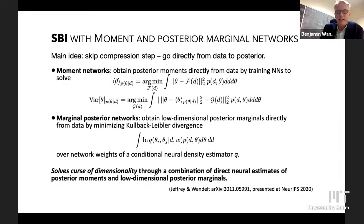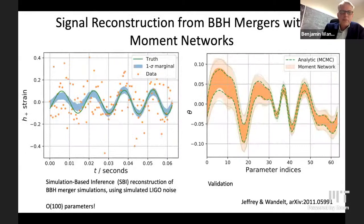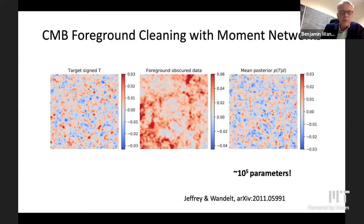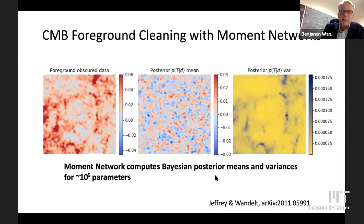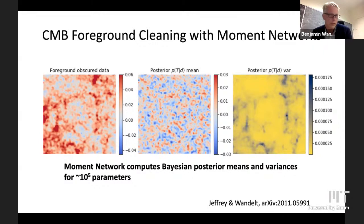You solve the curse of dimensionality — rather than learning a high-dimensional posterior surface, you just learn lower-dimensional projections that are typically the only objects you can really handle in practice. This is described in a NeurIPS paper. Here are examples based on gravitational wave simulations from binary black hole mergers, going up to a hundred thousand parameters — every single pixel is now a parameter. We applied this to CMB foreground cleaning. This is for temperature simulations obscured with a non-Gaussian foreground model. It turns out you can reconstruct the underlying temperature and get the posterior variance in a very plausible way: basically where you have a lot of foregrounds, you get a lot of variance. That doesn't happen when you assume Gaussianity of the foreground models, as many methods do.